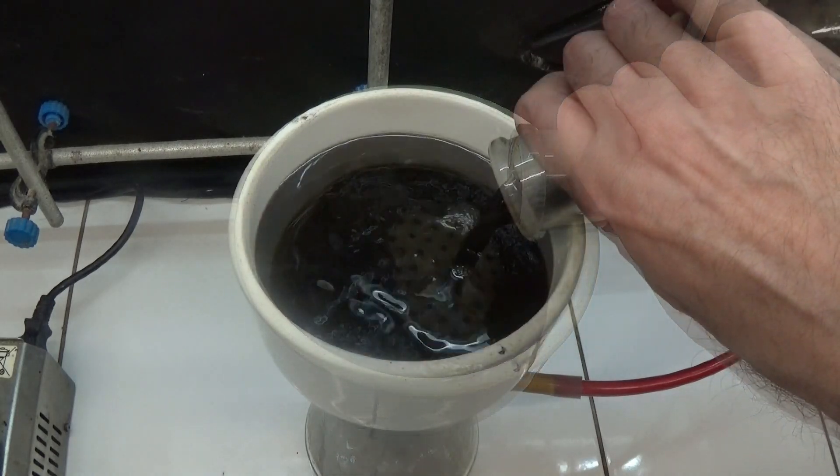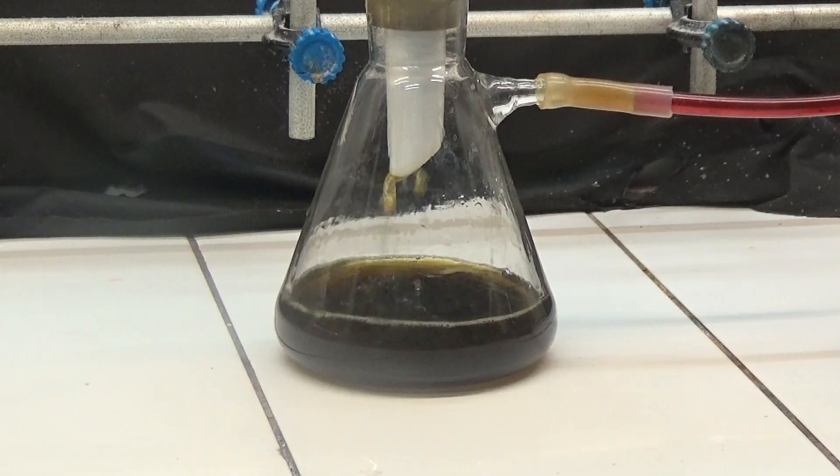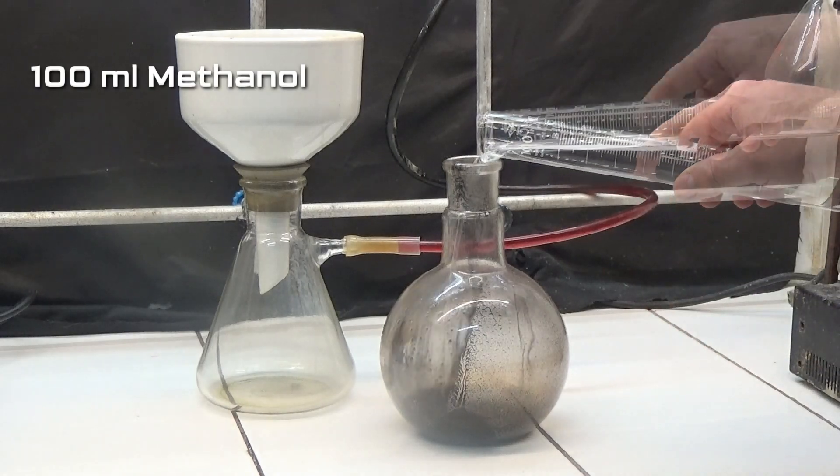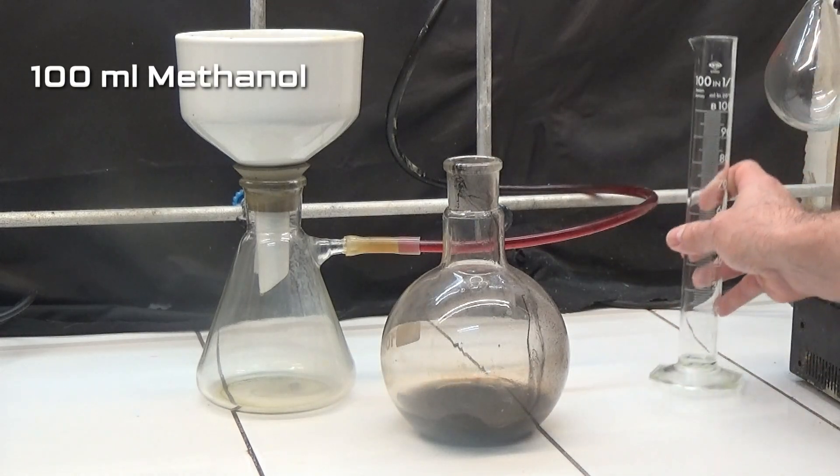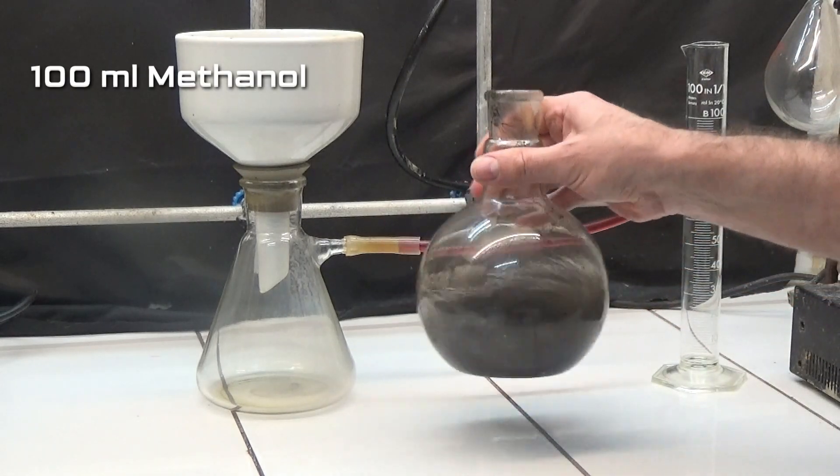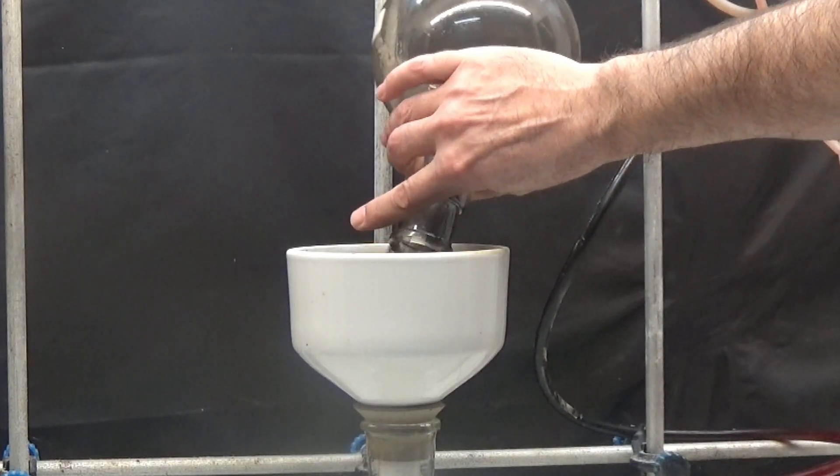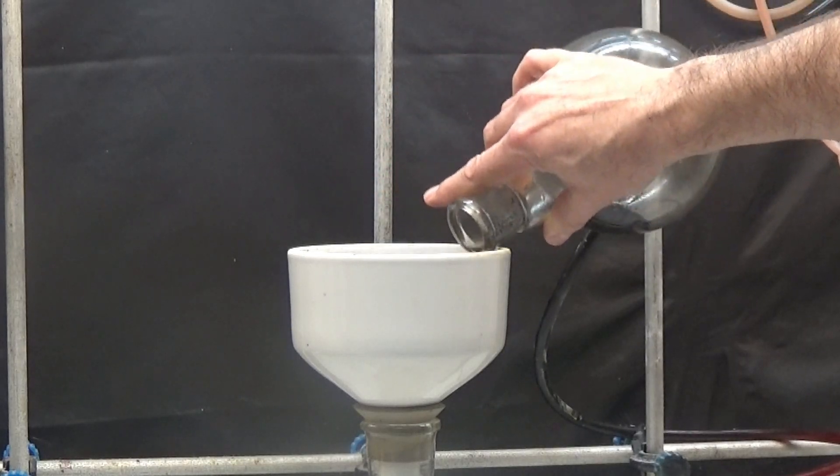Allow to cool and filter through a Buchner funnel with filter paper. Wash the retained precipitate with 100 milliliters of methanol. Keep the precipitate moist. The iron is pyrophoric and can ignite spontaneously.